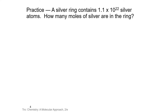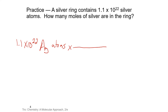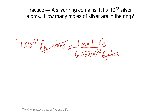We're going to start with our 1.1 times 10 to the 22nd silver atoms — silver is Ag. We're going to use the relationship that 1 mole is 6.022 times 10 to the 23rd silver atoms. Our silver atoms are going to cancel, and we'll be left with moles.